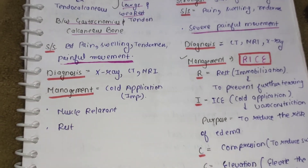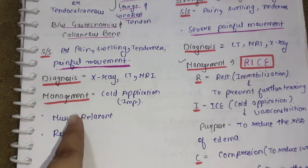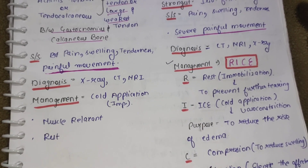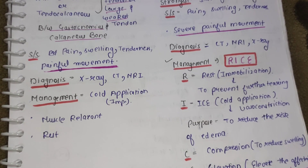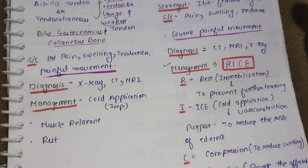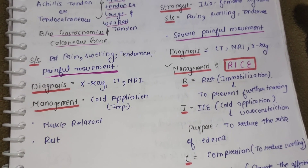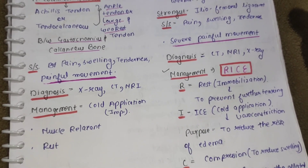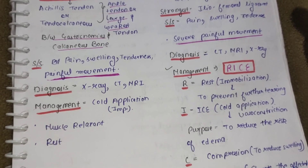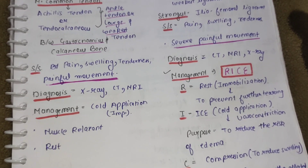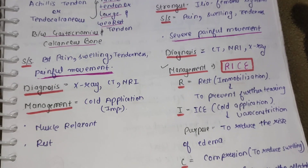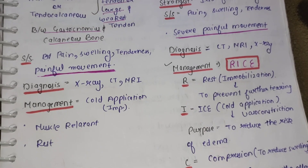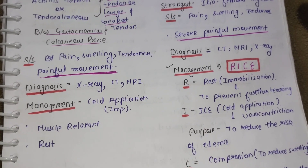Management — कैसे manage कर सकते हैं strain को. First, cold application का use किया जा सकता है. यह बहुत important होती है — cold application vasoconstriction करवाती है, blood vessels को constrict करवा देती है, ताकि जो risk है edema का वो reduce हो सके. Next, muscle relaxant drug दी जा सकती है patient को — यह muscles को relax करवा देगी. Next, adequate rest बहुत important होता है strain के treatment में.